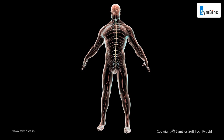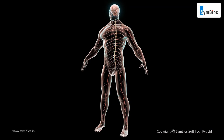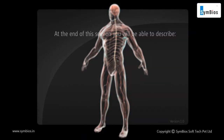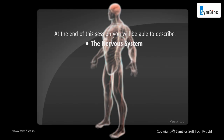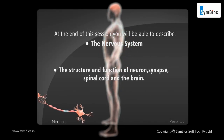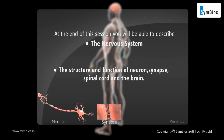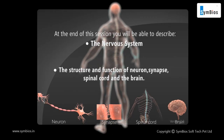The stimuli generates rapid impulses that travel to the brain for interpretation. At the end of this session, you will be able to describe: number one, the nervous system, and secondly, the structure and functions of neuron, synapse, spinal cord, and the brain.